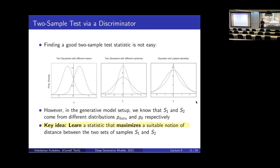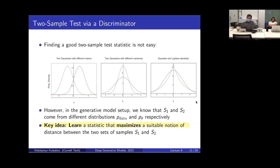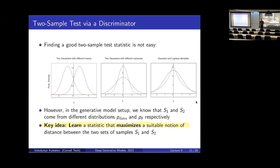The key idea is that we're going to try to learn the statistic that maximizes some notion of distance. We know these samples are real, these samples are fake. Can we use machine learning to learn a classifier that will maximally separate the two different classes? Once we've learned the statistic, we can fix it and then try to perform generative modeling to make the model distribution and data distribution similar according to our new test statistic. It's possible that the generative model will try to cheat and generate samples that fool the statistic. So we update the test statistic, then re-optimize the generative model, and keep doing this until no matter what kind of statistic we learn, the samples look indistinguishable.